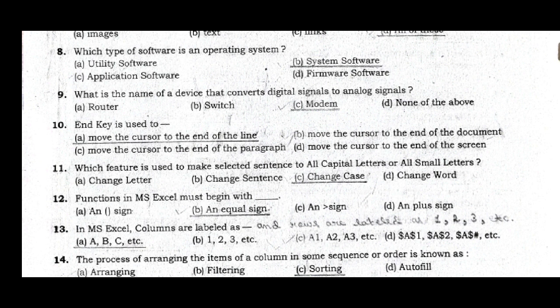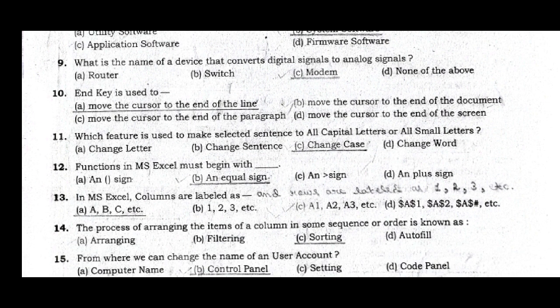Question 12: Functions in MS Excel must begin with — answer option B, an equal sign. Question 13: In MS Excel, columns are labeled as A, B, C, etc., and rows are labeled as 1, 2, 3.